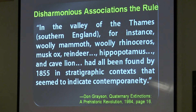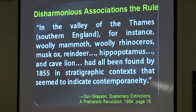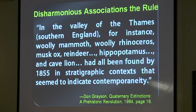Don Grayson of the University of Washington noted that in the Valley of the Thames in southern England, woolly mammoth, woolly rhinoceros, muskox, reindeer, hippopotamus, and cave lion had all been found by 1855 in stratigraphic contexts indicating contemporaneity — in other words, they lived together during the ice age. Big mystery.